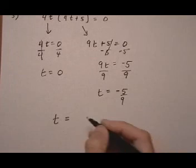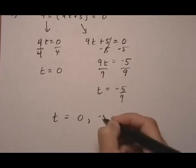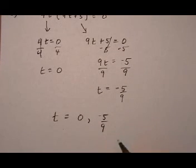So we show our final answer is T is zero or minus five over nine.